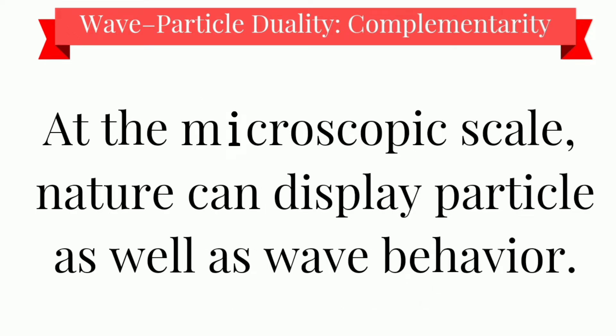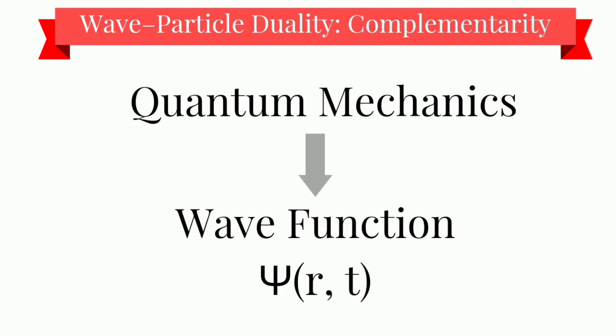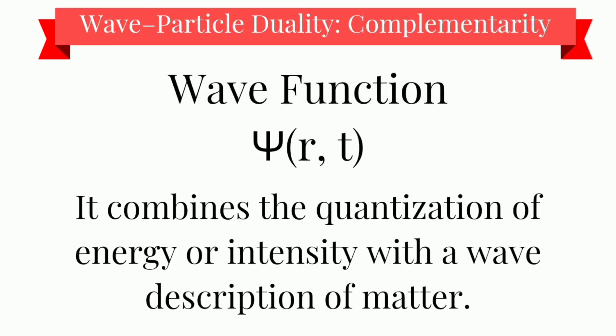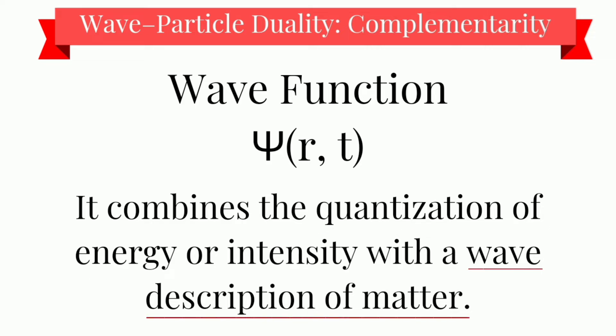They indicate that at the microscopic scale, nature can display particle as well as wave behavior. The theory of quantum mechanics gives us a tool, i.e., wave function psi — ψ(r, t). It helps us to know the behavior of particle and wave. It combines the quantization of energy or intensity with a wave description of matter; that is, it uses both particle and wave pictures to describe the same material particles.